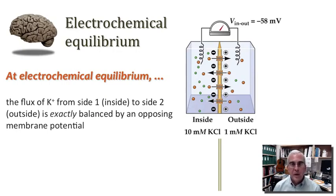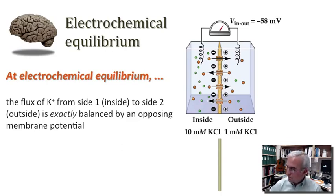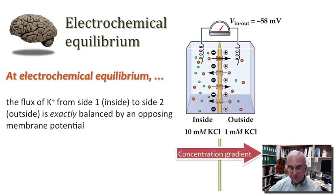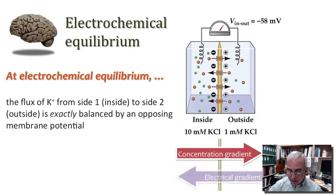When we establish electrochemical equilibrium, we have achieved a state at which the flux of potassium ions from one side of this membrane to the other is exactly balanced by an opposing membrane potential. As potassium diffuses down its concentration gradient, an electrical force builds up that is exactly equal and opposite to the strength of the chemical gradient. We chose to put a tenfold more concentrated solution of potassium chloride on one side, and potassium diffused across until an electrical gradient was established that is equal and opposite in magnitude.